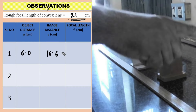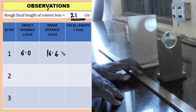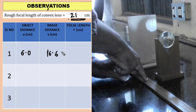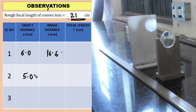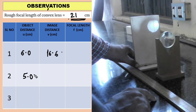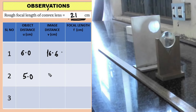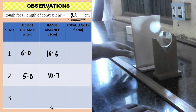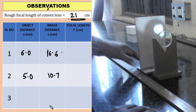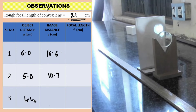Now, without changing the position of the convex lens and the object, for the second trial the object distance is 5.0 centimeters. We are going to find out the image distance for the same. Moving towards the screen for the clear image, the image distance is equal to 10.7 centimeters. Then again, for the third trial, the object distance is 4 centimeters, and the image distance will be equal to 6.9 centimeters.